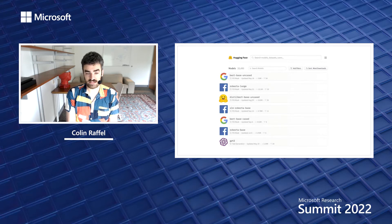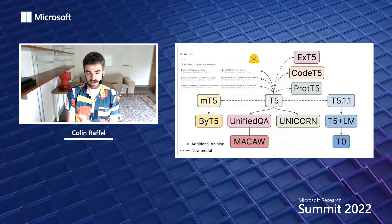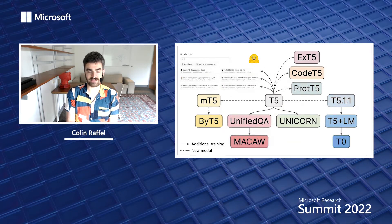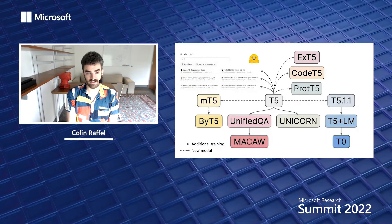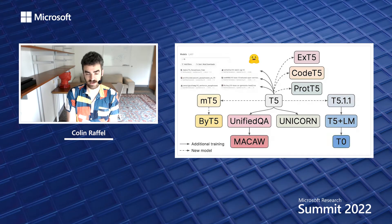These models are typically released and then never updated — they're left as-is until a better model comes along to supplant them. There are many reasons we might want to update or improve a pre-trained model. Looking at the T5 model, developed with colleagues at Google, there have been many subsequent versions proposed, such as the Unified QA model and the multilingual MT5 model. In fact, there are over a thousand models on Hugging Face based on T5, yet there is no principled way to track these updates or say that a new, improved version of T5 has come along.